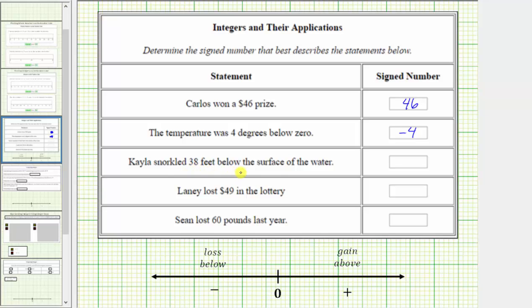Kayla snorkeled 38 feet below the surface of the water. For this situation, the surface of the water would be at level zero. Because Kayla is 38 feet below the surface of the water, negative 38 best describes the statement.